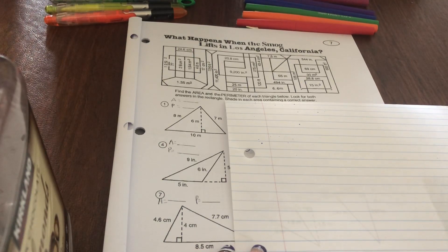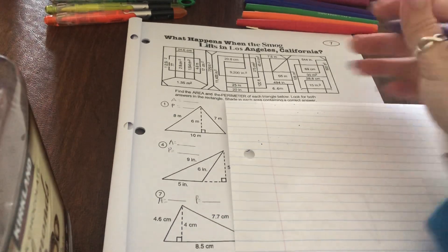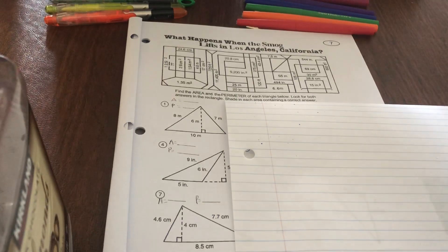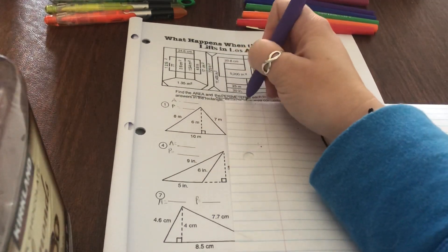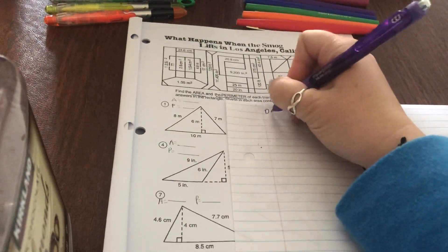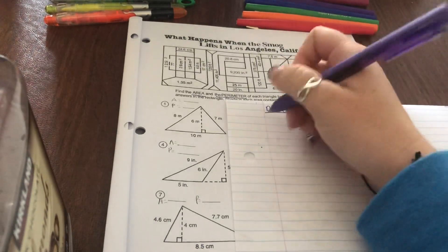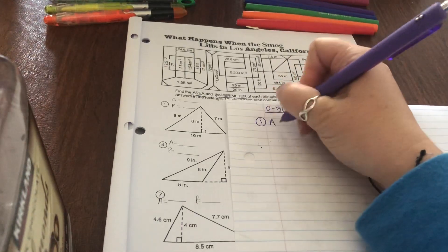Good morning my little mathematicians. We're going to get you started on Pizazz worksheet D56. Always read the directions. It wants you to find the area and the perimeter of each of these triangles. So make sure to label that we're doing D56 Pizazz and then number your problems and show your work. Each time I want you to write out the formula.